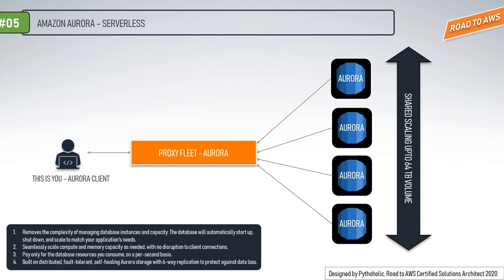With Aurora Serverless, the database endpoint connects to a proxy fleet that routes the workload to a fleet of resources that are automatically scaled. Because of the proxy fleet, connections are continuous as Aurora Serverless scales the resources automatically based on the minimum and maximum capacity specifications. With an increase in demand, it scales automatically and we don't need to change or configure anything.